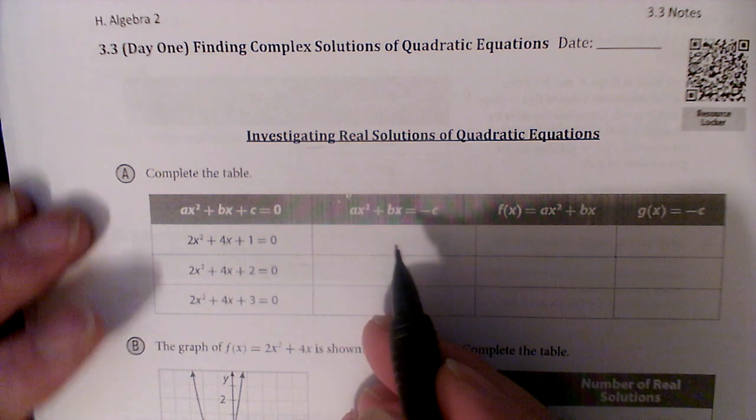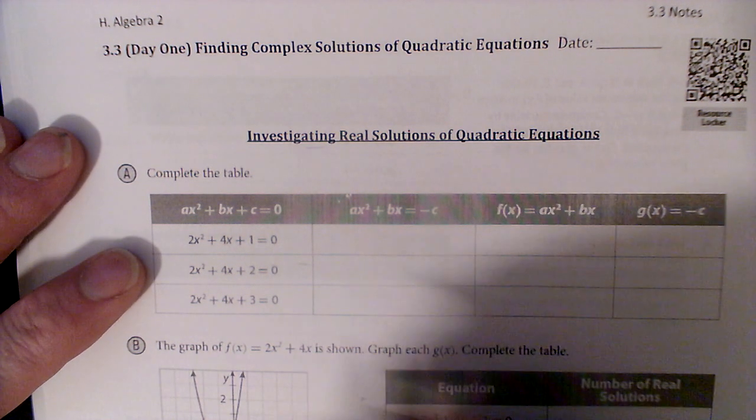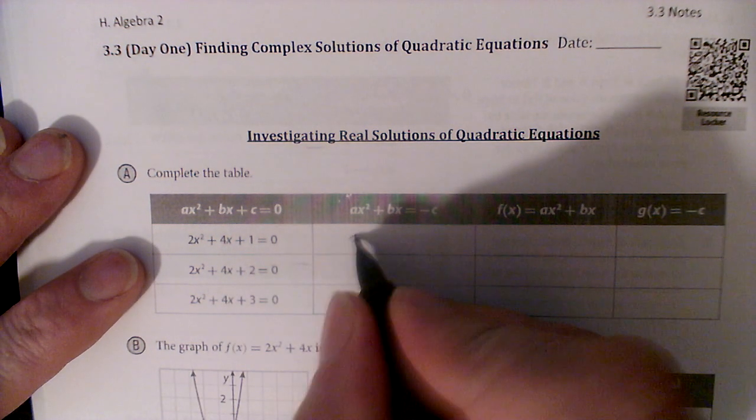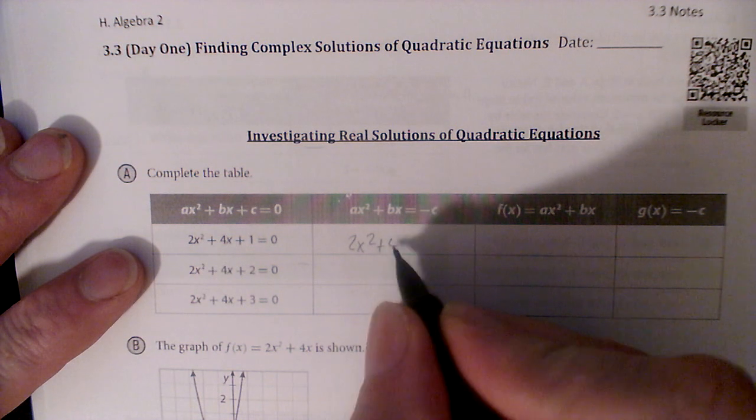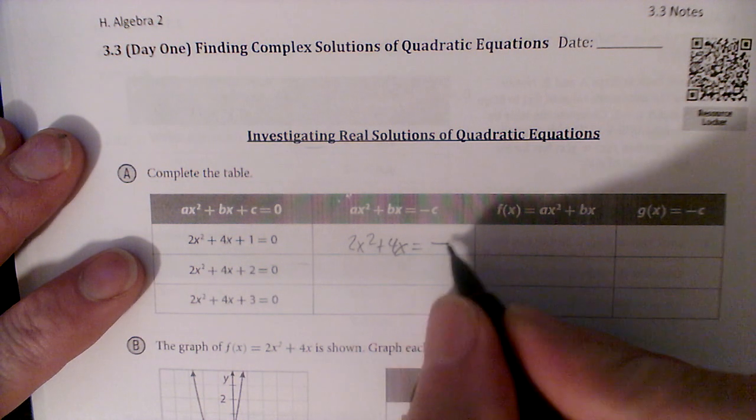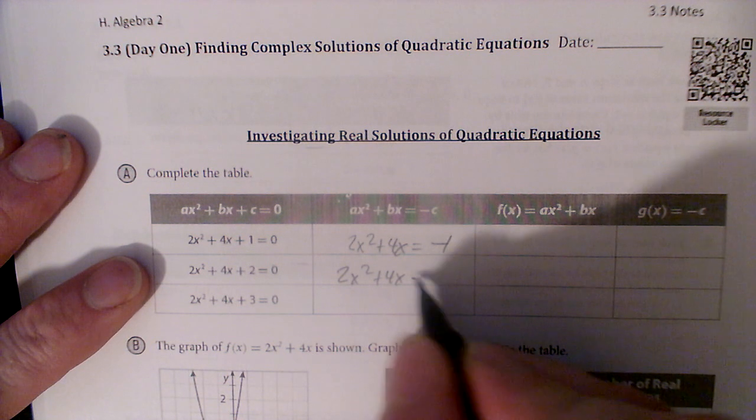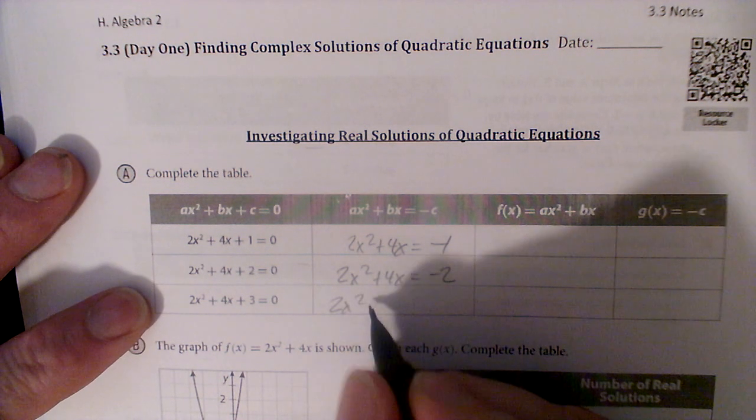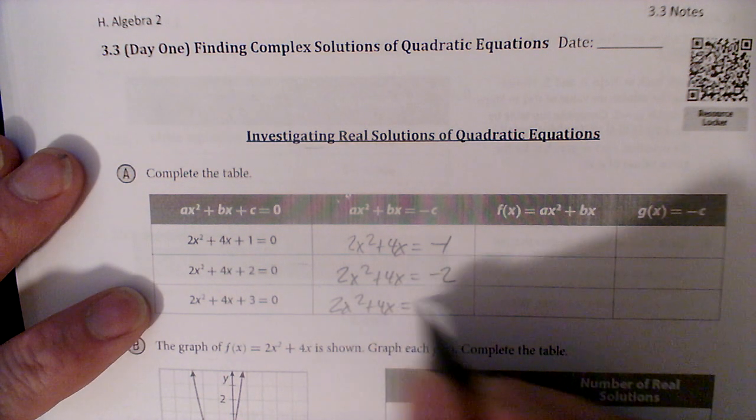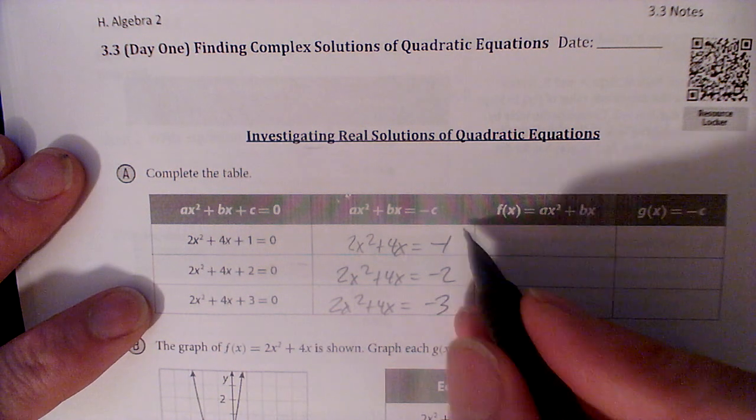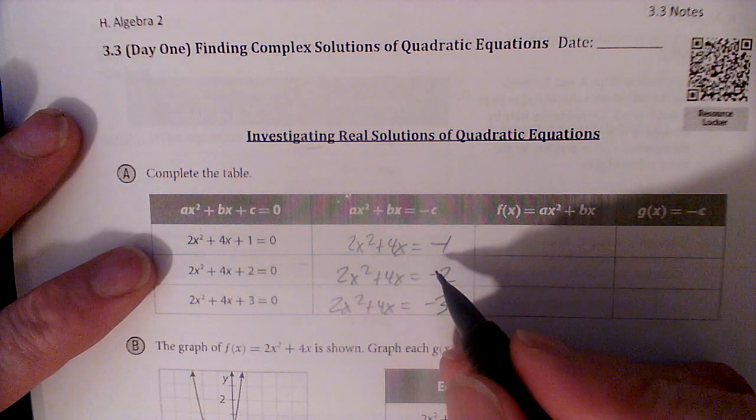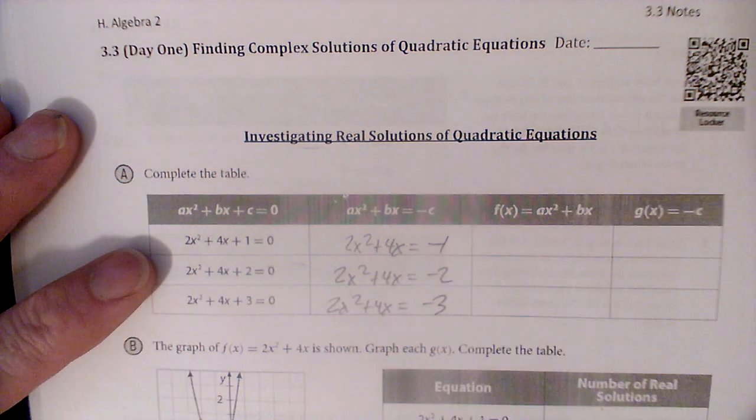We are going to move the c over to the other side. In this case, the c is the constant. So if I subtract 1, I've got 2x squared plus 4x equals negative 1. Same thing here. 2x squared plus 4x equals negative 2. And 2x squared plus 4x equals negative 3. And we can see that I have just moved the constant to the right side.